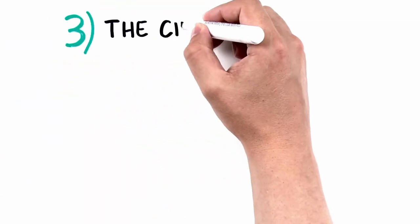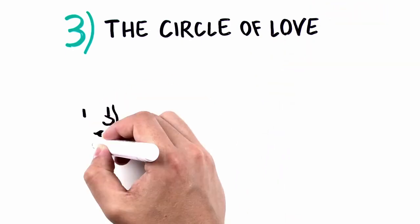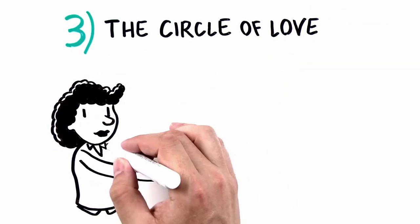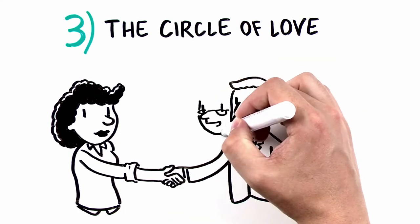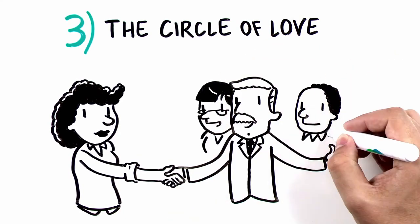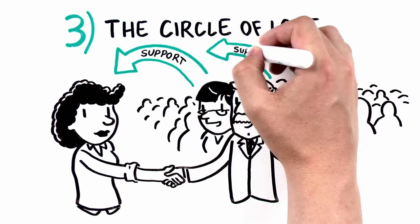Number three, the circle of love. Happy team members repeatedly return and invite their friends, increasing people power over time. Committed team members also help the community support your organization.